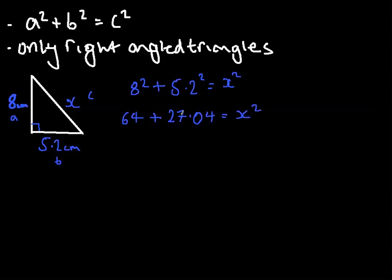So, if we add these up, 64 plus 27 equals 91, and 91.04 equals x squared. And then on your calculator, you would just have to rearrange this so that x equals the square root of 91.04.